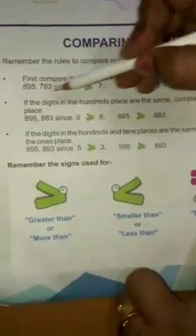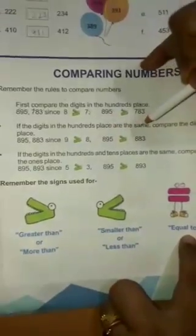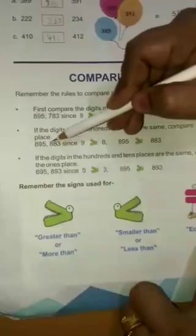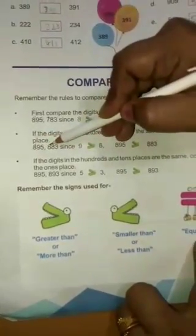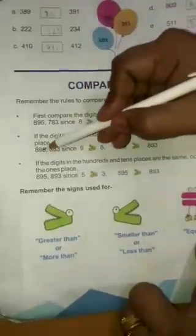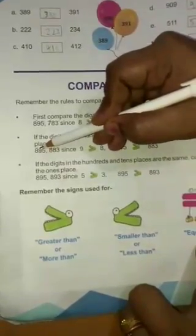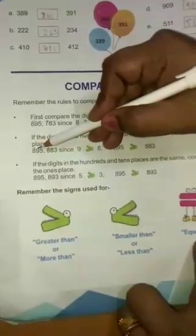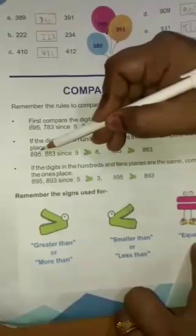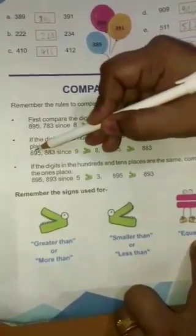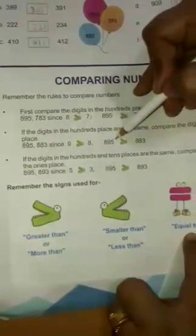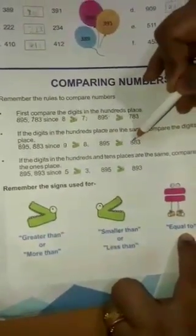Next, if the digits in the hundreds place are the same, for example 895 and 883. Both are 800, both are same. Then, how to compare? You will see tens. Here, 9 and 8. Which number is greater? 9. So, 895 is greater than 883.